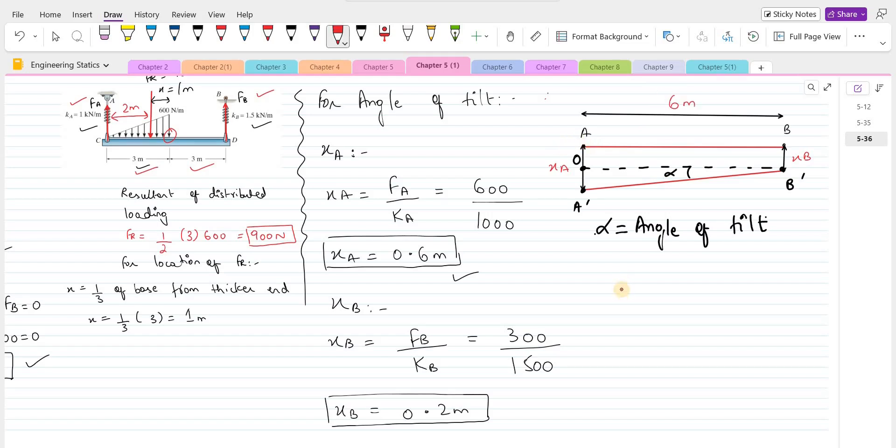The length of the beam is 6 meters. So for the angle alpha, we can consider the triangle A dash, B dash and O. So for the angle alpha, we can use the ratio of tan.